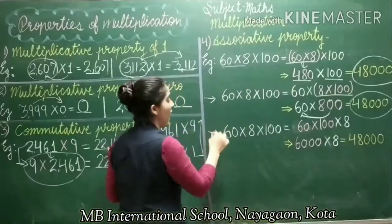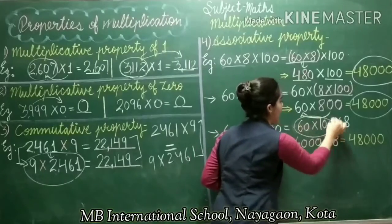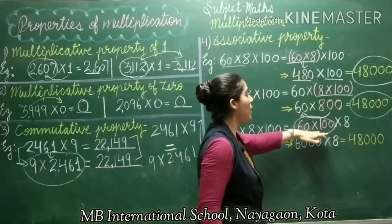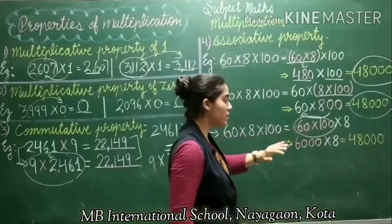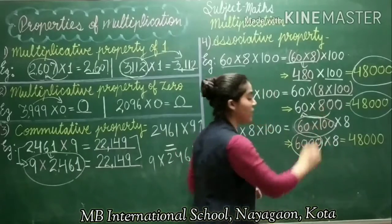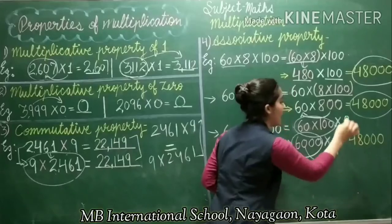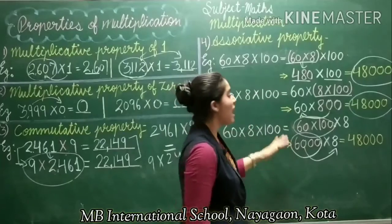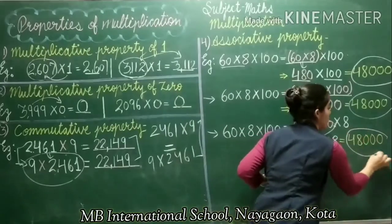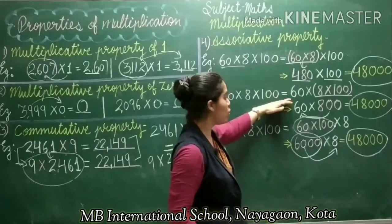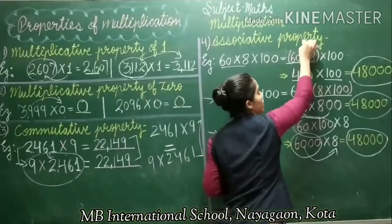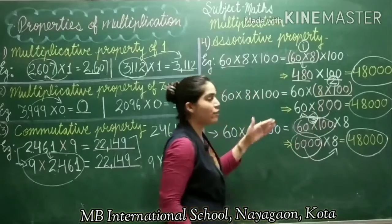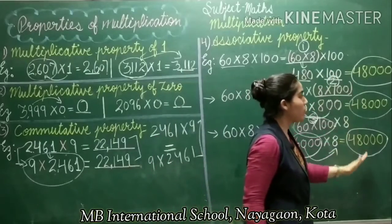In the next order, I changed the group to 60 into 100. So after multiplying I got the product 6,000, and then at the last step I multiply by 8, giving the same final product. After changing the group across all three arrangements — first group was 60 into 8, second group was 8 into 100, third group was 60 into 100 — after changing the group, all 3 products are the same: 48,000.